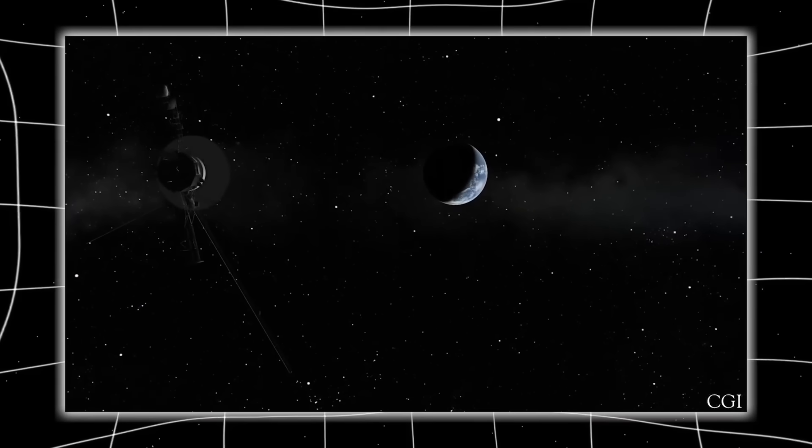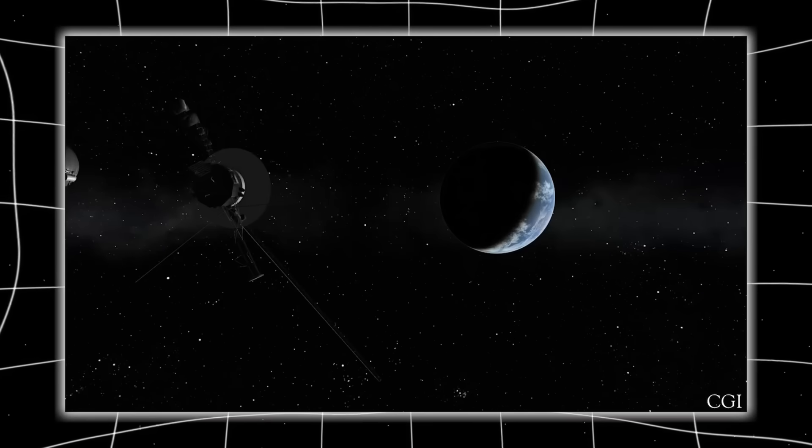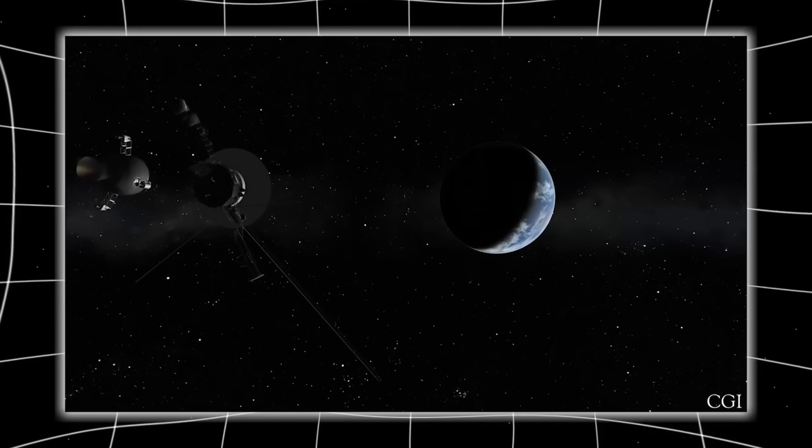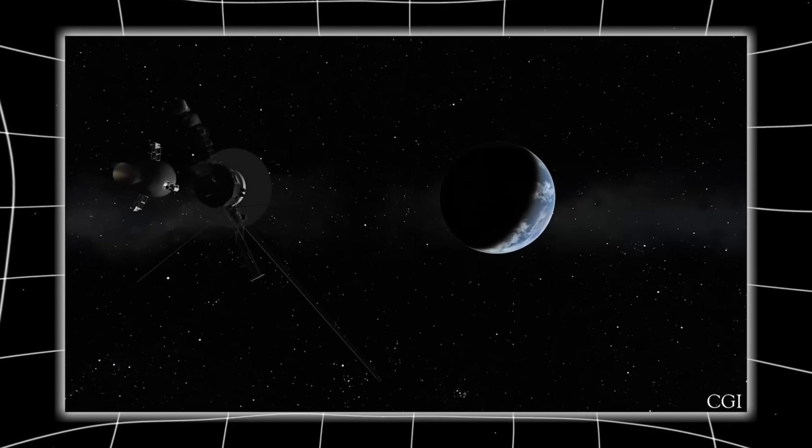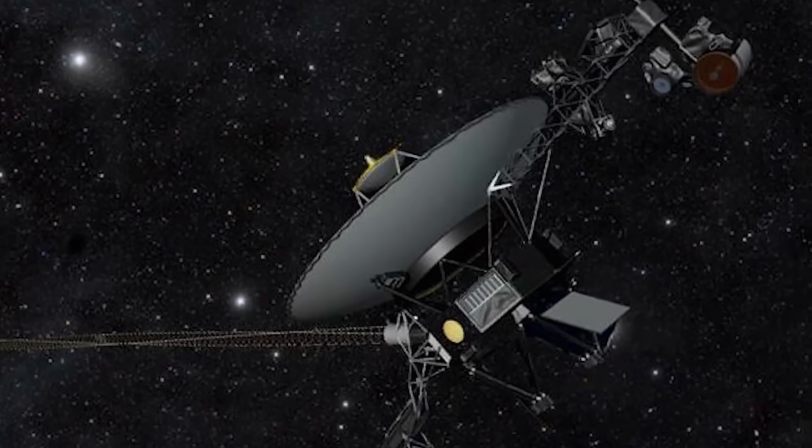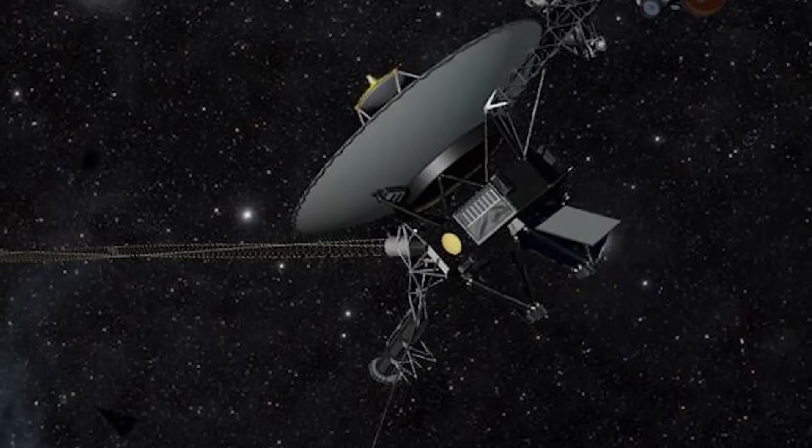It confirmed what many quietly feared. Our solar system is not floating aimlessly in a void. It is shielded. And outside that shield, the rules begin to bend. Radiation intensifies. Fields align. Particles shift. Time and space distort.